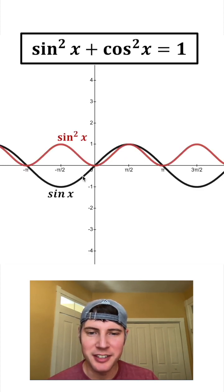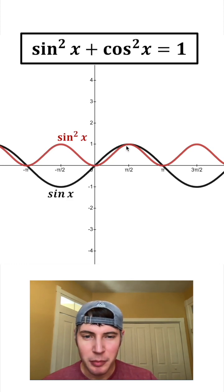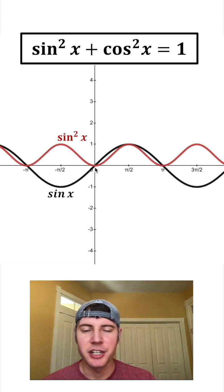You'll notice how everywhere where the sine is negative, the sine squared becomes positive, and you can tell here in the positive area that the shape of the graph changes a little bit as well.